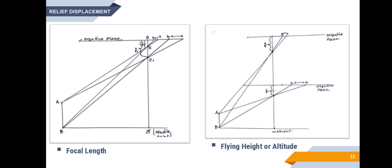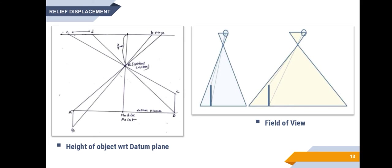The fourth factor is flying height or altitude. If the focal length of the camera remains constant when the flying height is increased, the relief displacement will be decreased. The object AB has been photographed at two different altitudes with the same focal length; the relief displacement decreased as the flying height increased. So, in every flight mission, in order to maintain a certain scale as the flying height is increased, the focal length must be increased.